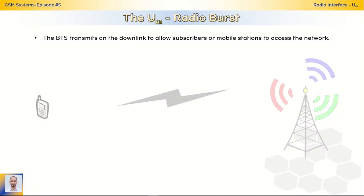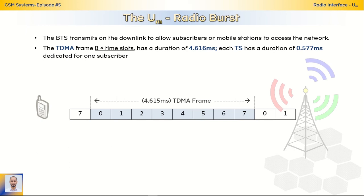The UM radio burst. The BTS transmits a frequency of 200 kHz on the downlink to allow subscribers or mobile stations to access the network. To increase capacity on the same frequency channel, the GSM system allows multiple subscribers to access the network simultaneously by adopting TDMA technology, which divides the frequency into 8 time slots. The duration of a TDMA frame is 4.616 ms, so the time slot duration is 0.577 ms, which is dedicated for one subscriber.